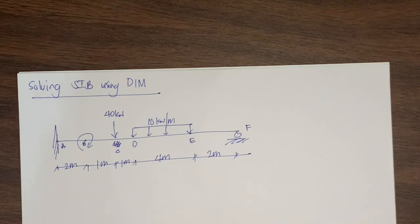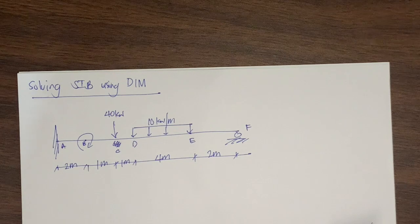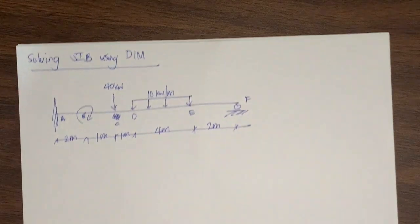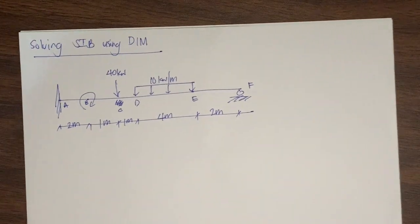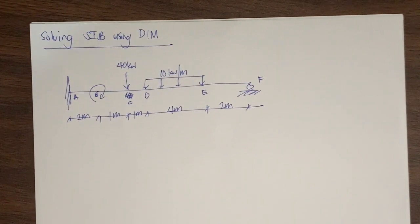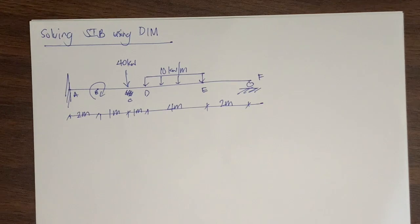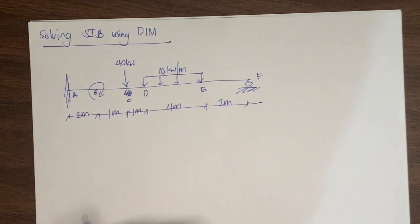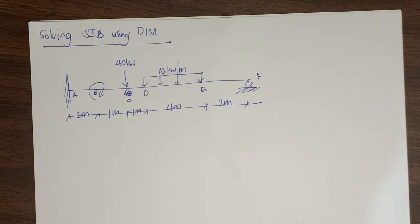Since we don't know what the reactions are, what we will be solving here are actually the reactions. We need to solve for the reactions using the double integration method. Since we don't have the reactions yet, let's first draw the free body diagram.